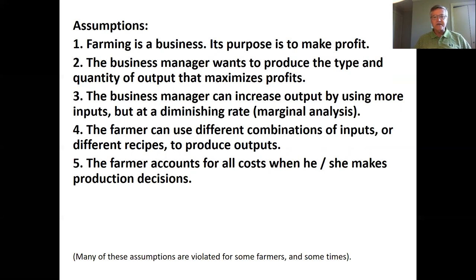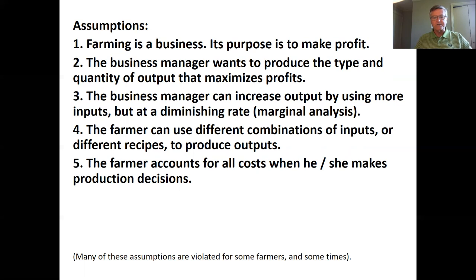We assume that farmers can increase the amount of output by adding more inputs — for example, adding more fertilizer or seed — but at a diminishing rate. As we have diminishing marginal utility from consumption, we also assume there are diminishing marginal returns to inputs. If we put on one unit of fertilizer, we get a pretty big return; if we put on the hundredth unit, we get a relatively small return. We also assume farmers can use different combinations of inputs — different recipes — to produce the same output, and that the farmer accounts for all costs associated with their enterprise when making production decisions.